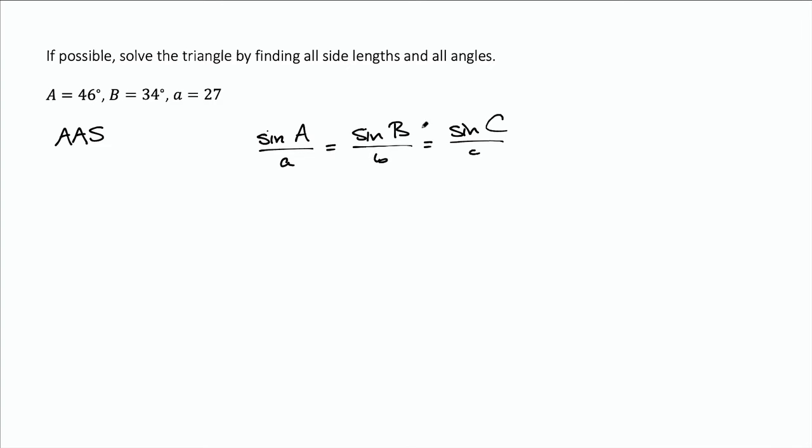When I have two angles, the first thing is we can find that third angle by simply subtracting those two from 180. So the angle C will be 180 degrees minus 46 degrees minus 34 degrees, and that equals 100 degrees.